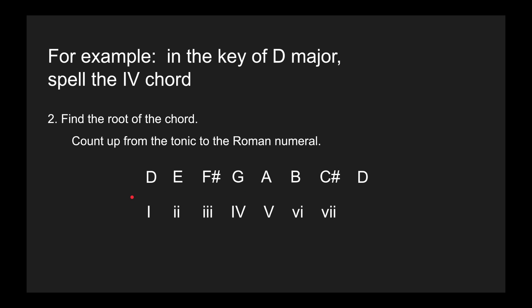Next, I find the root of the chord by counting up from the tonic to the Roman numeral. So I'm looking for the four chord. Notice that it's one before five - that's how that works in Roman numerals.